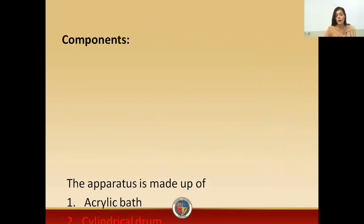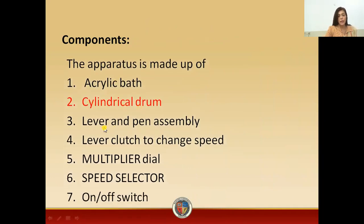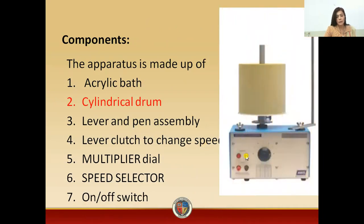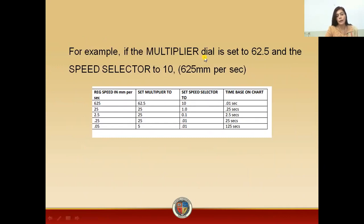Now, what are the major components of the kymograph? It mainly consists of the acrylic bath, a cylindrical drum, lever and pen assembly. Then we have the lever clutch to change the speed, the multi-dial, and the speed selector. There is also an on-off switch, which in this apparatus is on the back. In our lab, we set the multiplier dial at 62.5 and the speed selector is adjusted to 10.